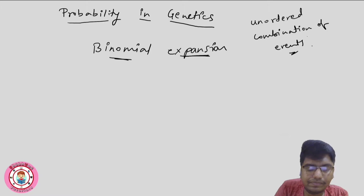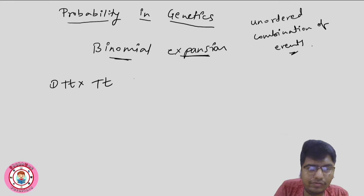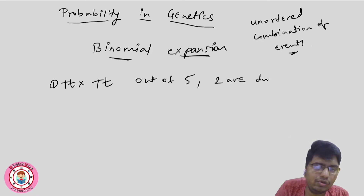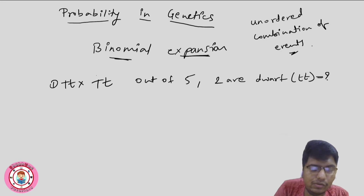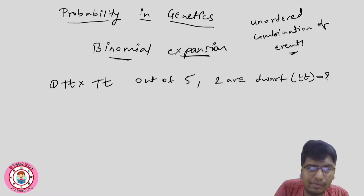What does that mean? We are crossing heterozygotes, and we want to find the probability that out of 5 offspring, 2 are homozygous recessive. This is the type of probability we want to find, and we solve it using the binomial expansion method.